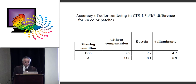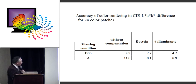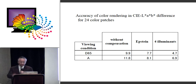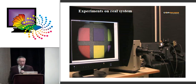This table shows again the average value of color difference for 24 patches. If we use four illuminants, we have good improvement in color accuracy.